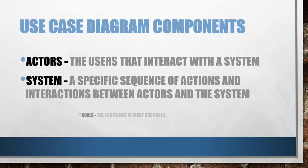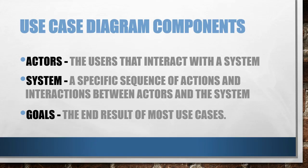Now let's look at the basic components of use case diagrams. These are only the basic components; there are quite a few others. The first components are actors, system, and goals. Actors means the users that interact with the system — they can be a person, a machine, or something else. All users and admins are actors because they interact with the system from outside. The system is a specific sequence of actions and interactions between actors and the system — it represents the whole main process of the application.